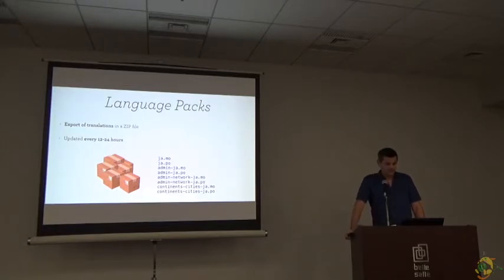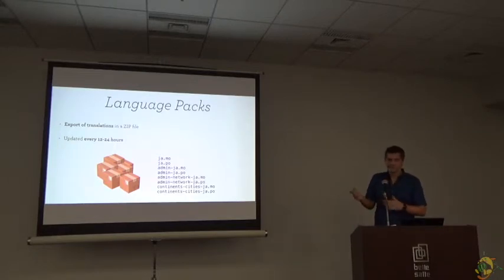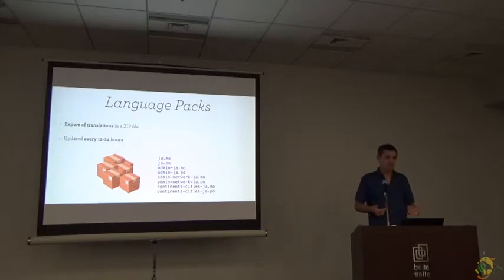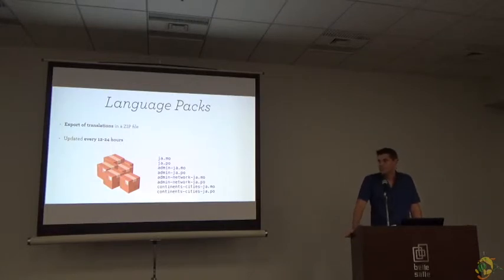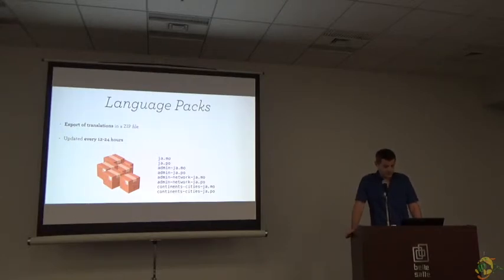Now that we have the translations, we still don't have them in your local WordPress install. We finally have to think about how we can send the translations back to WordPress. We do this in so-called language packs, which is just an export of translations in a zip file, updated every 12 to 24 hours. It usually includes 6 to 8 files, which is done for performance reasons. For example, WP Admin and the frontend have together 4,000 strings — each with 2,000 strings. If you load the frontend, we don't need the admin strings, so translations are split up into 6 to 8 files.